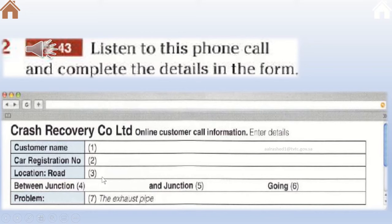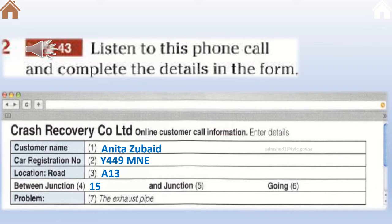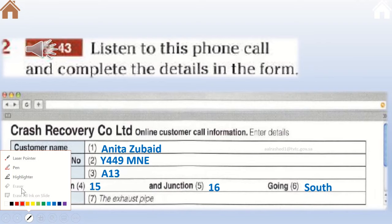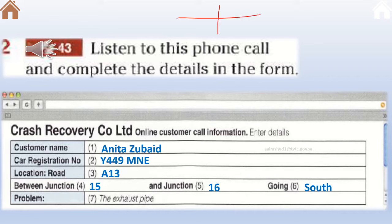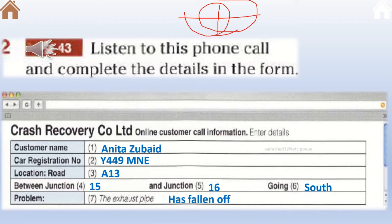Let's fill out the information. The customer name was Anita Zabade. The car registration number was Y-4-4-4-9-M-N-E. The location was the M13 between junction 15 and junction 16, going south. A junction basically means an intersection. The problem was that the exhaust pipe has fallen off — the exhaust pipe is the one responsible for emitting smoke out of the car.